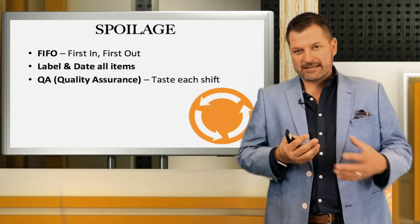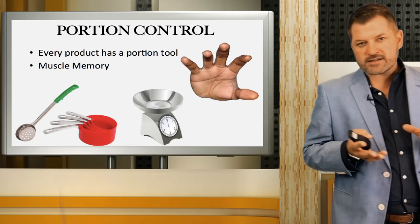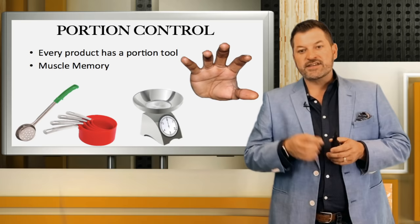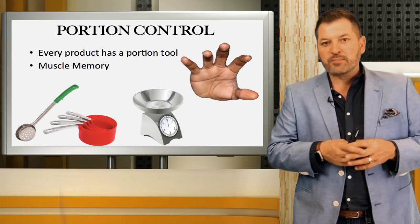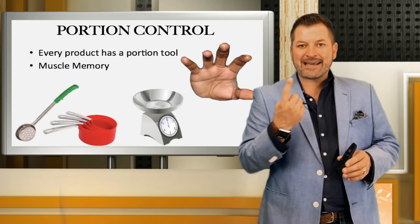Now I'm going to talk about the biggest impact destroying profitability in the restaurant business: portion control. The fastest way to start managing portion control consciously is to make sure everybody understands what the acceptable portion amount is. Do you have a recipe book? Have people been trained to those recipes? Not only do you implement that training, you have to inspect it — that is critical.